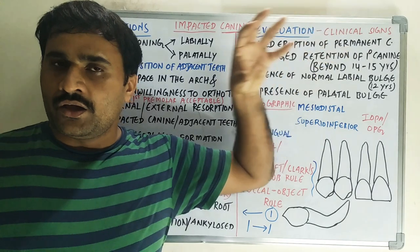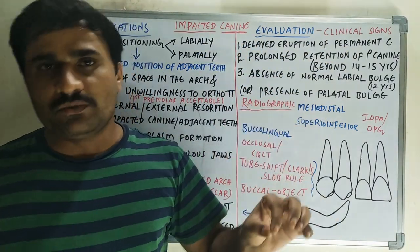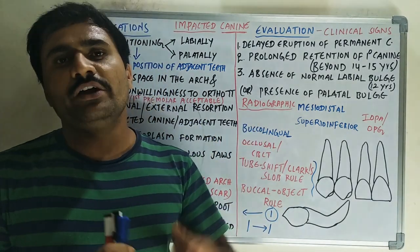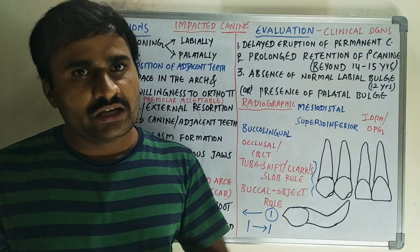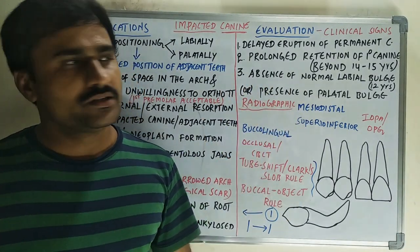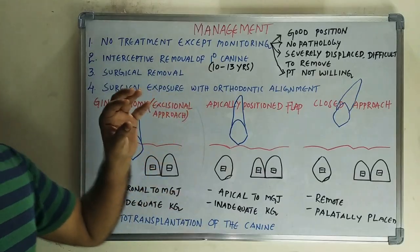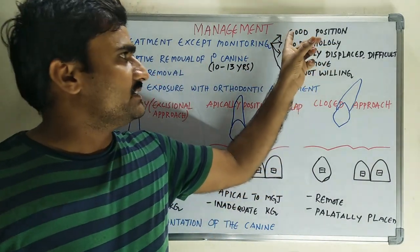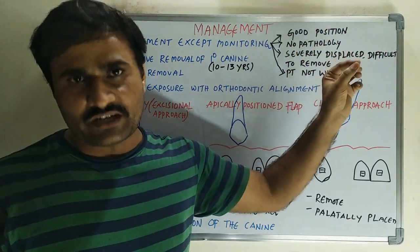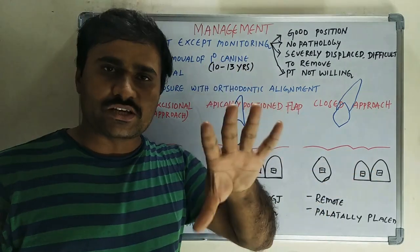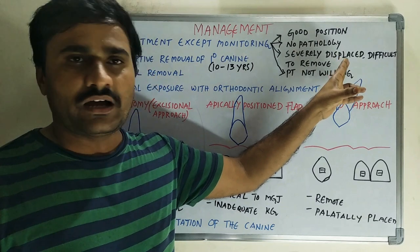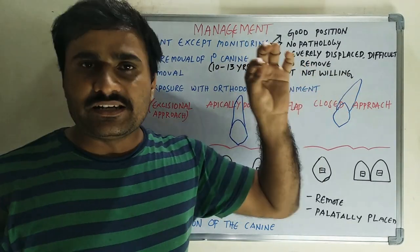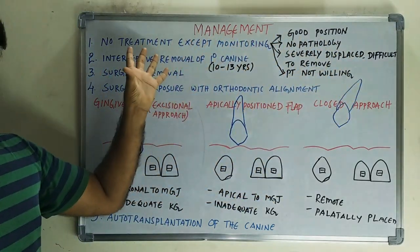Localization of the canine is very important because based on that localization only, you determine which type of flap to use and where to remove bone. For complete surgical planning, you need exact localization. Now we will discuss management options. There are five treatment options. The first is no treatment except monitoring — indicated when the canine position is good, there is no pathology (no resorption, no cyst/neoplasm), or if it is severely displaced and difficult to remove, or the patient is not willing.